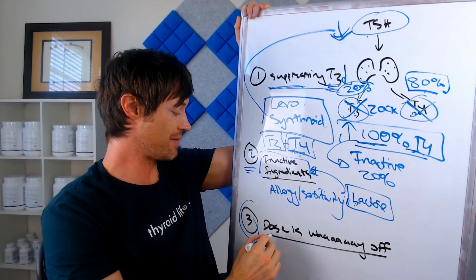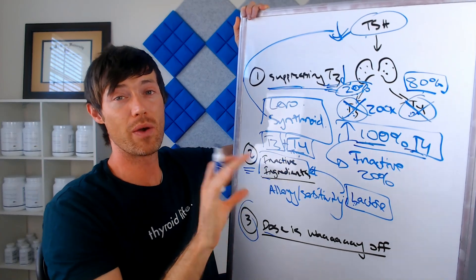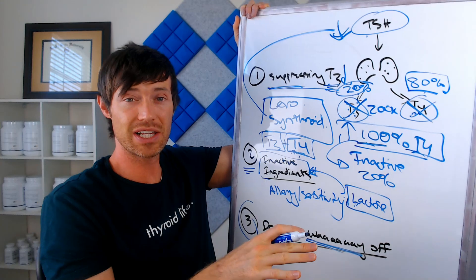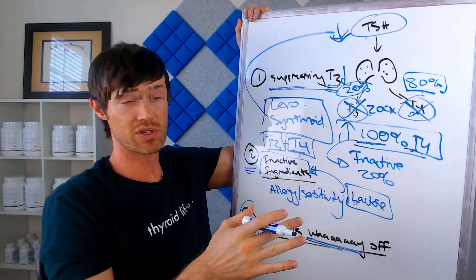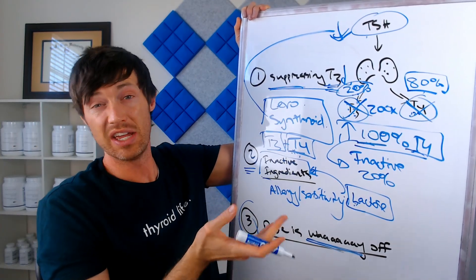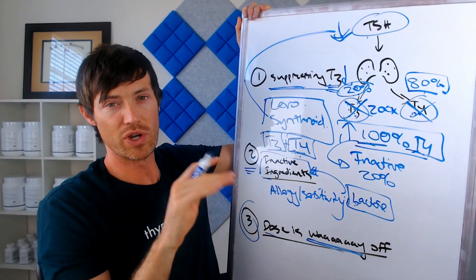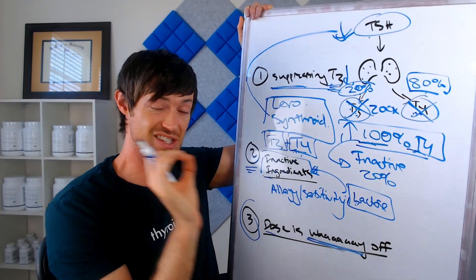Number three is that sometimes your dose may be way, way, way off. So I want to emphasize the way off. That's what that means here, because it's usually unlikely that when your doctor puts you on a dose of thyroid medication, that let's say as close as 75% of the dose that you need, they're never going to get it right right away.